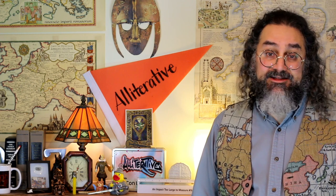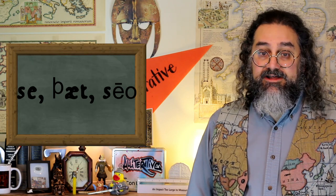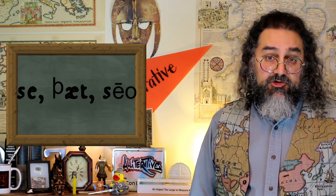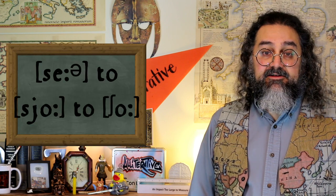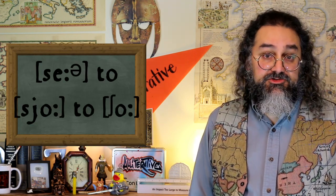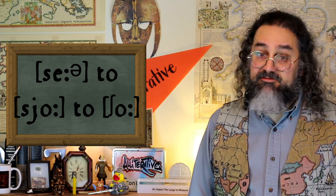Another suggestion is that 'she' didn't come from Old English 'heo' at all, but instead from 'seo', the feminine form of the Old English demonstrative 'se', meaning 'that' — also the source of modern English 'that' and 'the'. The idea being similar to the first theory, with 'se' becoming 'seo' and then the short jump from that to 'sho', though that still leaves the problem of the vowel.